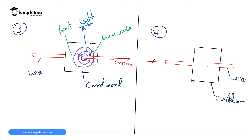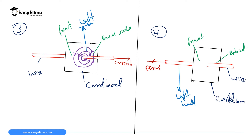Now the fourth example, where current moves in the opposite direction to example three — from the right of the screen to the left of the screen. We identify the front part of the wire and the behind part. If you are swimming along this wire in the direction of this current, from right to left, then your left hand will be pointing in this direction. Therefore, if you have a compass needle behind the wire, the field line will be moving that way.